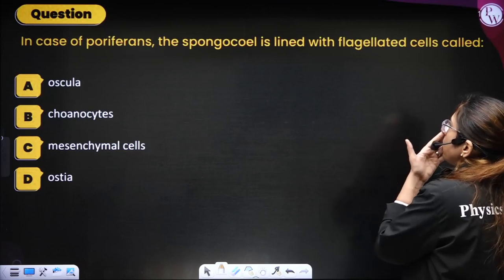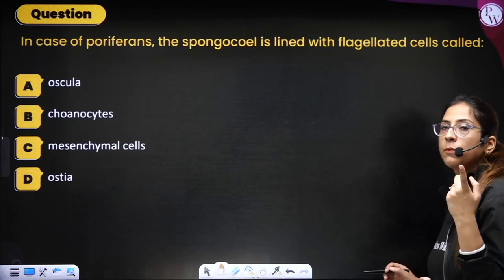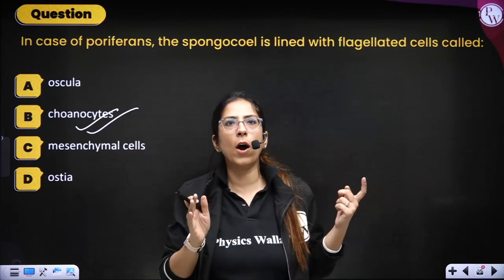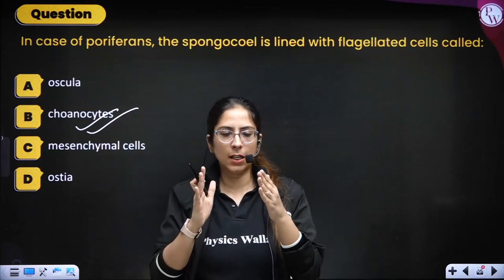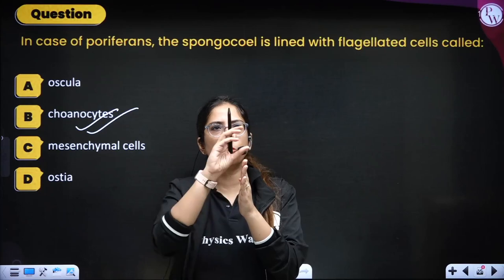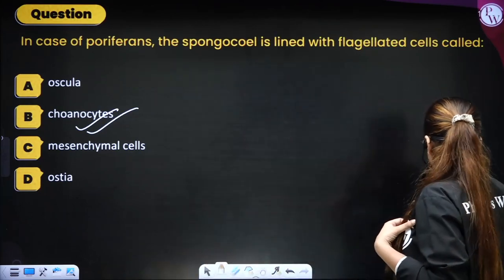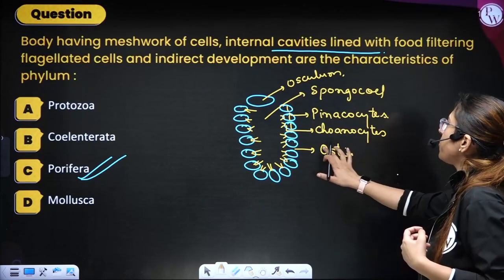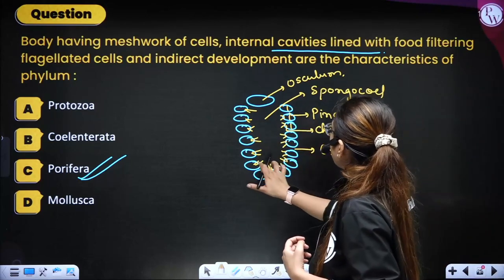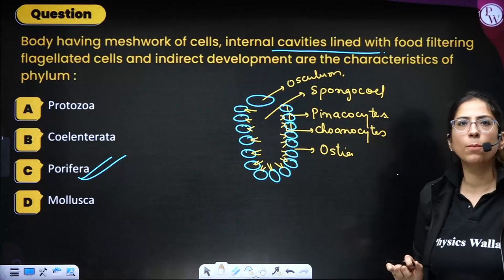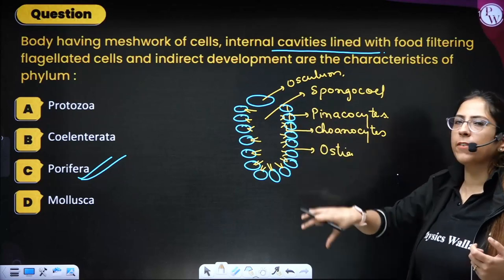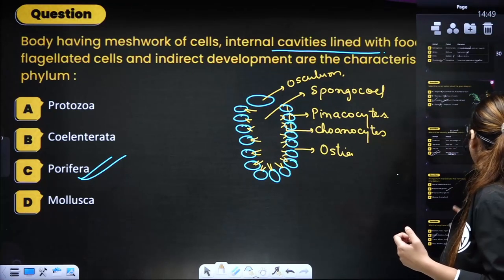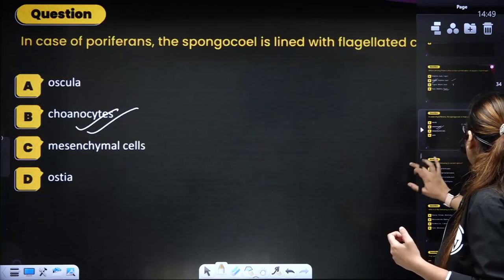In Porifera, the spongocoel is lined by flagellated cells called choanocytes (coanocytes) which form the choanoderm. We already discussed this — choanocytes line the internal cavity (spongocoel) and the canal system is a very important topic of Porifera.